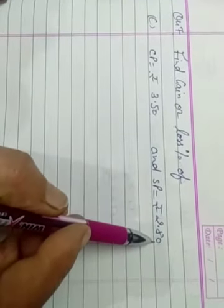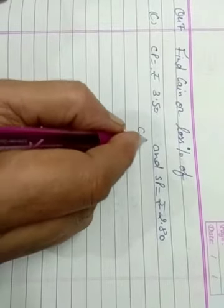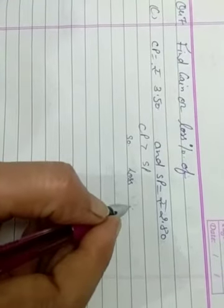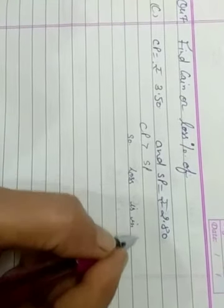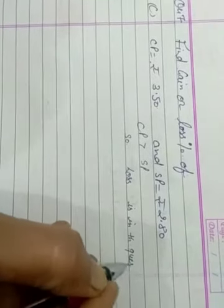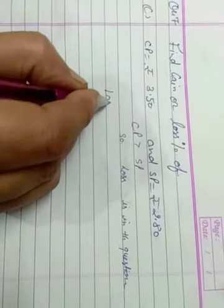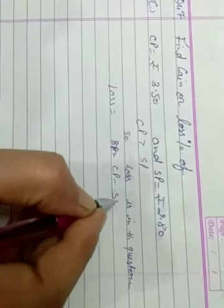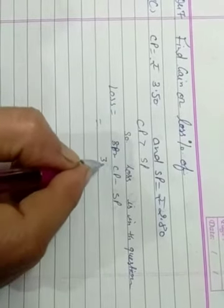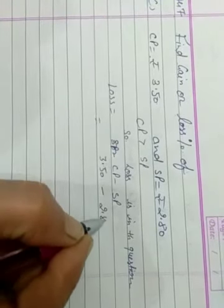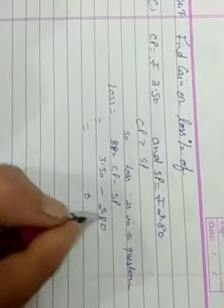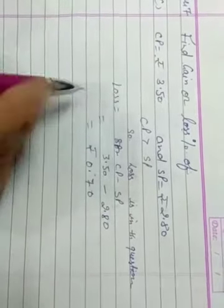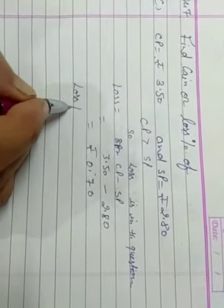SP, CP is greater than SP, so loss is in this question. Write the formula of loss: loss is equal to CP minus SP. 3.50 minus 2.80. 0 minus 0 is 0, 5 minus 8, 7. 0.70 rupees loss.